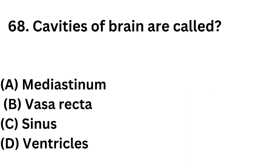Question number 68. Cavities of the brain are called: Option A: Mediastinum. Option B: Vasa recta. Option C: Sinus. Option D: Ventricles.